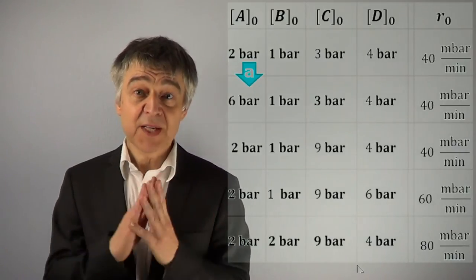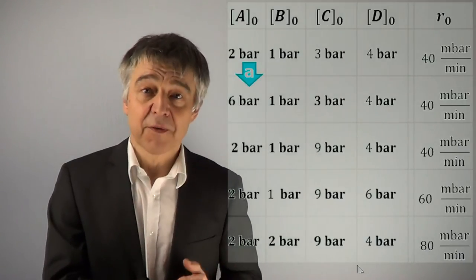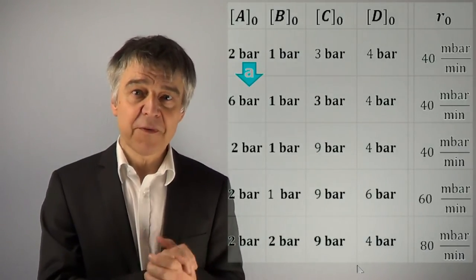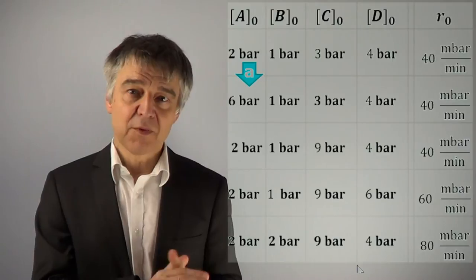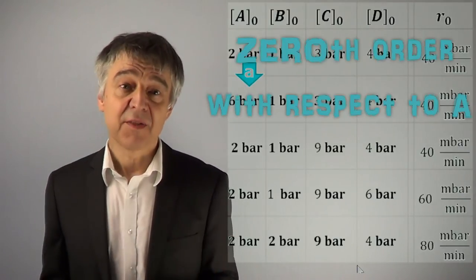Comparing the first with the second experiment demonstrates that a three-fold of the concentration A has no effect on the rate of reaction. The reaction order with respect to A is zero.